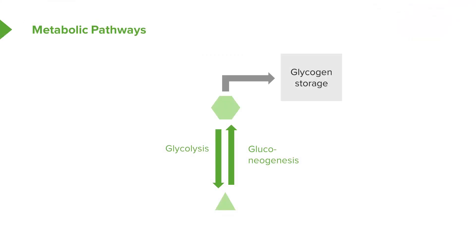Glucose is broken down into pyruvate through glycolysis, and of course in the other direction we have gluconeogenesis. It is important to understand that that breakdown can very rarely have some problems, but that's pretty rare — because if you're having a problem with glycolysis, it's pretty hard to get by.